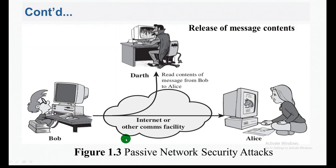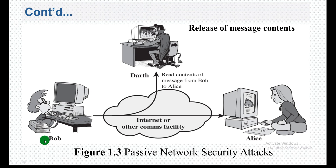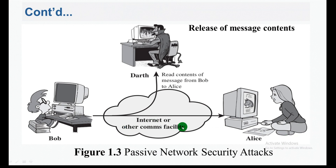As you have seen here, there are two parties: Bob and Alice. Data is transmitted from Bob to Alice via the internet or other communication facility, and there is a passive attacker observing the communication.